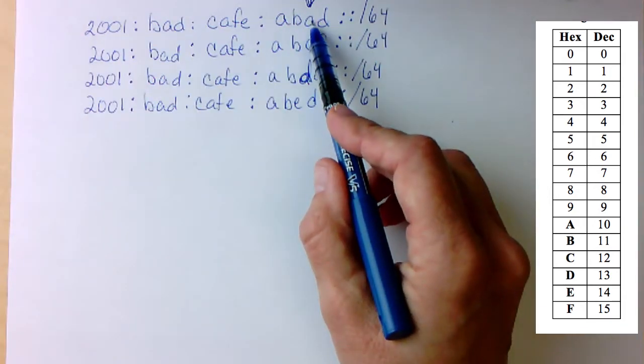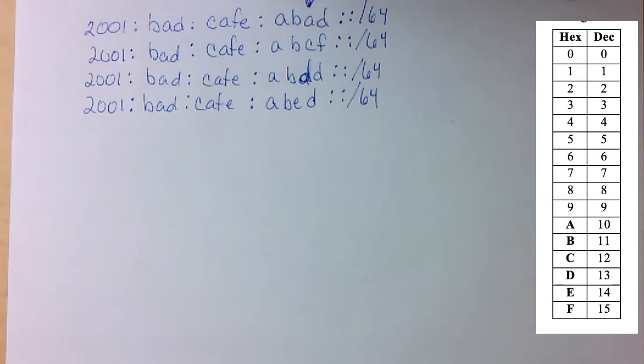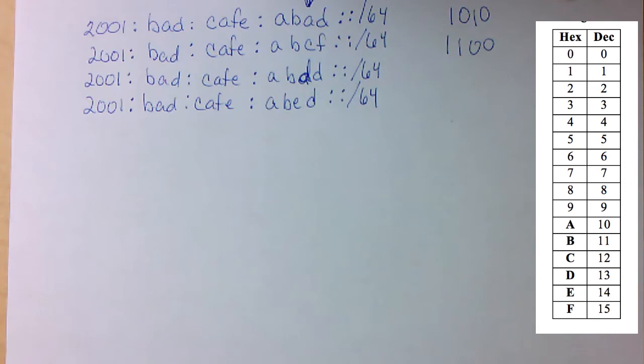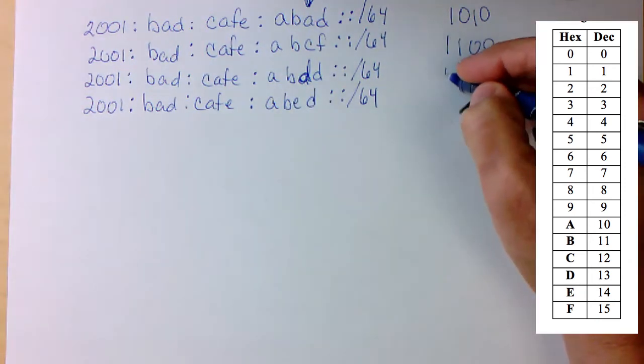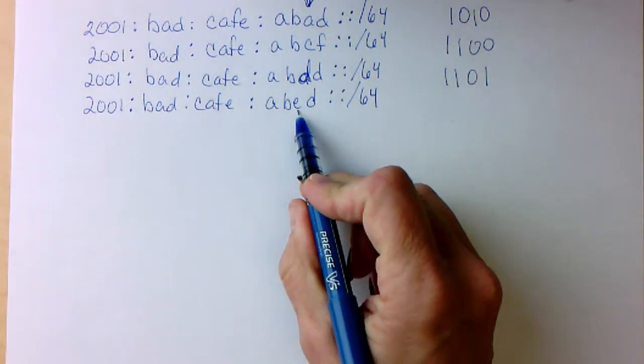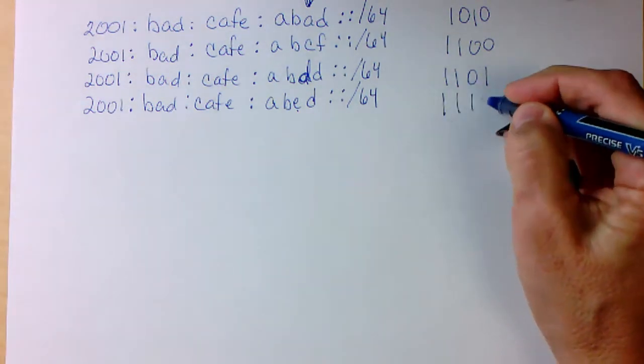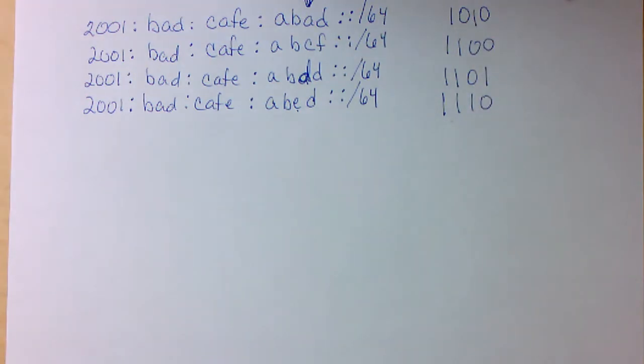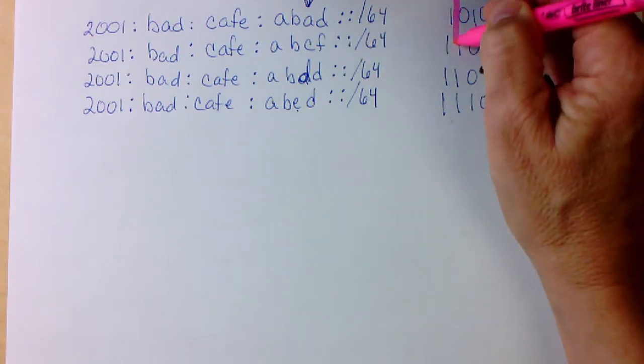We know that A is 10 in binary, so I do 1010. This one is ABC, so the C is a 12, 1100. AD, that's the number 13. And then E, that's the number 14. Now I need to look at these binary values, determine what is in common, and draw a line where the similarity and the commonness stops. I'm going to draw my line right here.